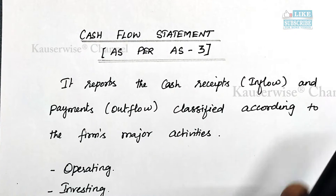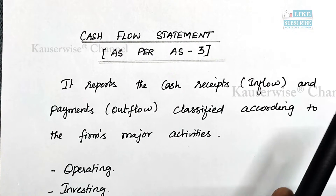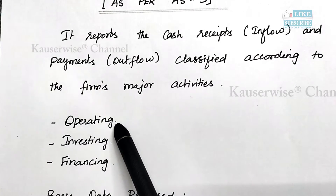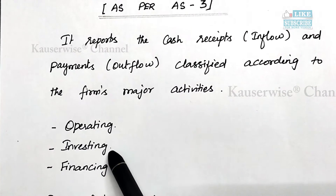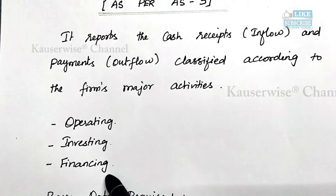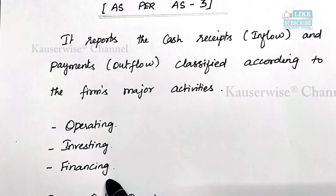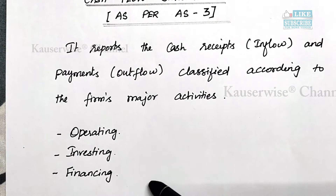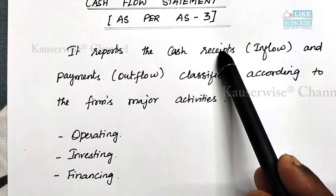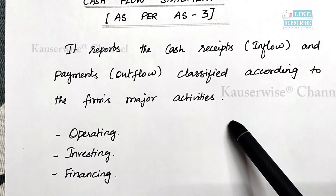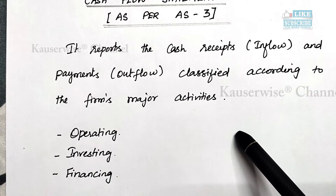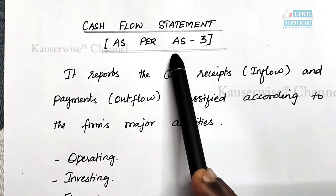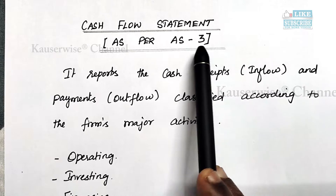The organization's activities are classified into 3 major categories: number 1 is operating activities, number 2 is investing activities, and number 3 is financing activities. These are the 3 components which are there in the cash flow statement.